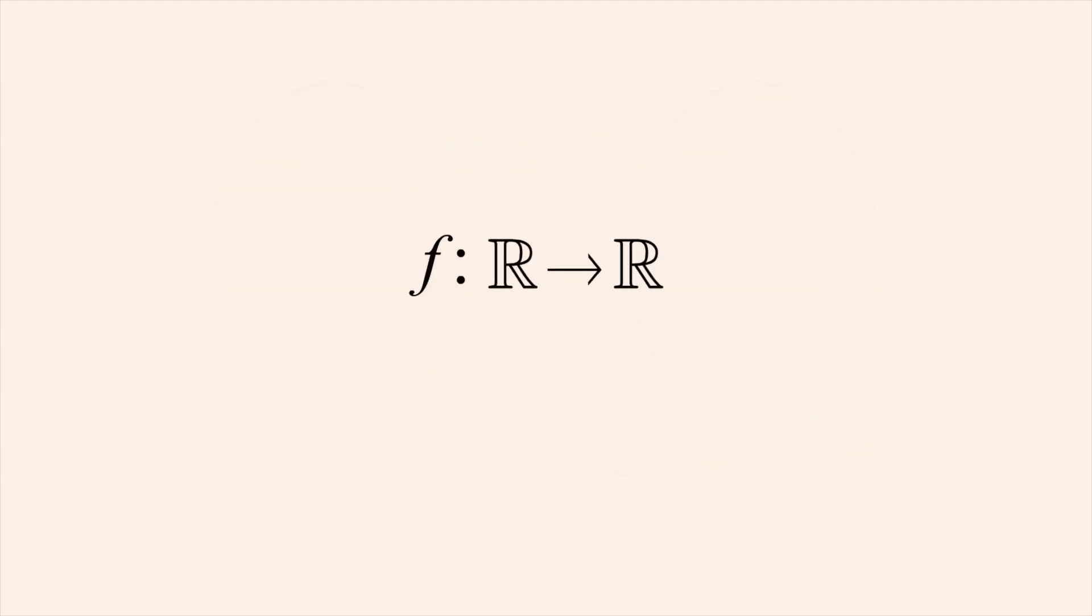This notation tells us that both the domain and codomain of f are the set of real numbers. This is read as f is a function from R to R, or f is a function on R, or we can say that f is a real-valued function of a real variable.